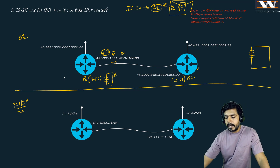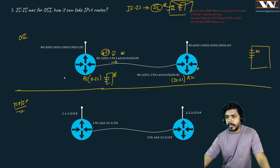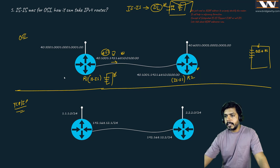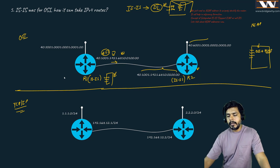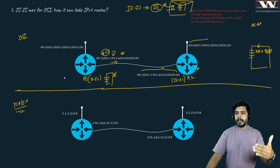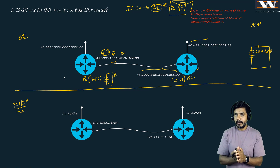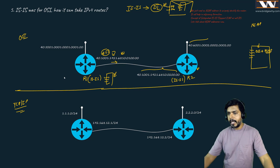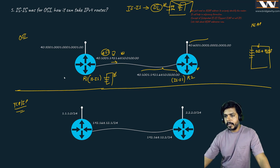ISIS protocol can write anything in its message that this router, running ISIS, can understand. It can write inside that 'I am sending you a route which is an OSI model route.' The type of this route is OSI. In OSI, we have NSAP - Network Service Access Point - which is the name of those alien-looking addresses. So in the OSI model, ISIS protocol was sharing NSAP routes.